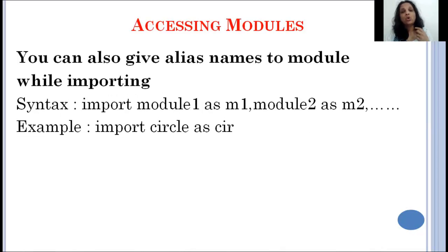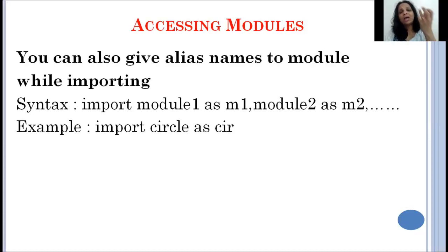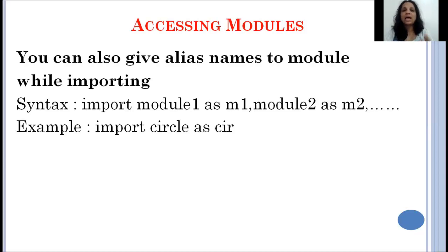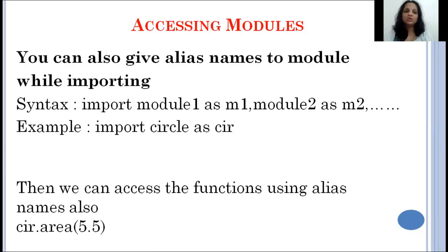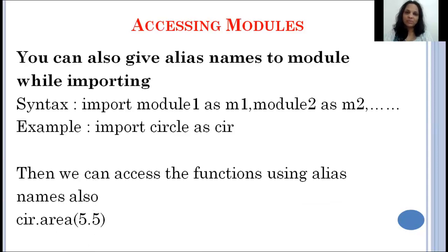There are other ways of accessing a module. Suppose the module name is too long or complicated and you don't want to write it every time — you can give an alias name. Like import math as M, then instead of math.pow you write M.pow. Similarly, import circle as CIR — this is not necessary, it's optional. Then you can call functions using CIR as shown in the example.